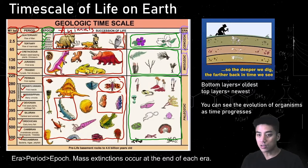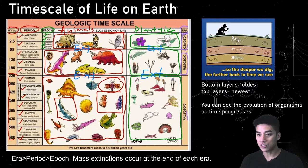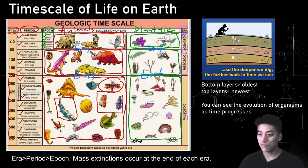Relatively speaking, humans have been around a very short time — just the last 2.5 million years. Each era is marked by a mass extinction, which allows for the succession of life, so new organisms roll in. You can see this advancement and progress — this evolution over time.